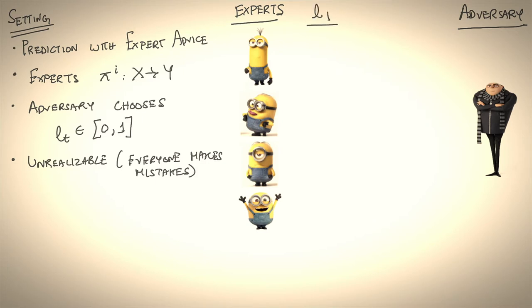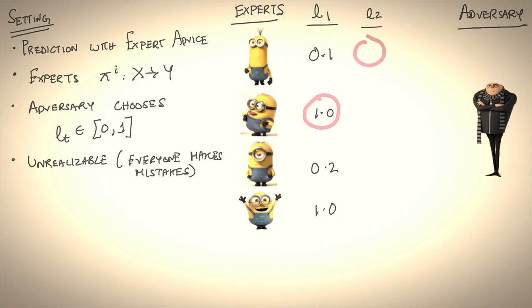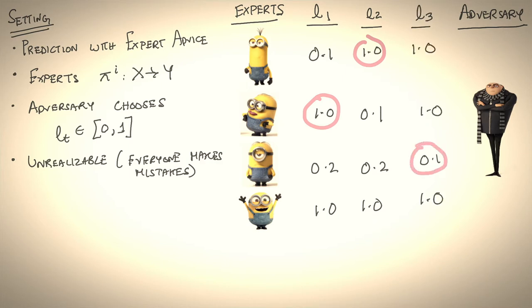Typically, let's say in round one, you choose expert two and your adversary hands you a loss vector where you see that the expert you chose has a high loss. Maybe you switch to expert one and the adversary has another loss vector that has a high loss for that expert. And so you keep going — eventually, in some rounds, you get lucky and choose an expert that actually has low loss.